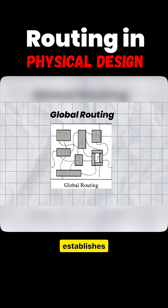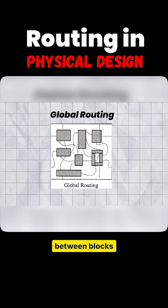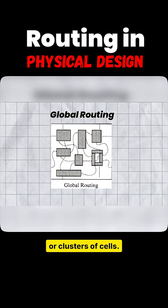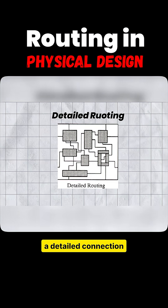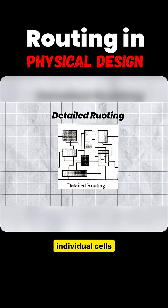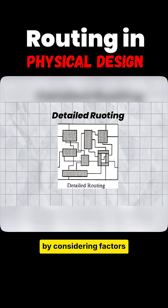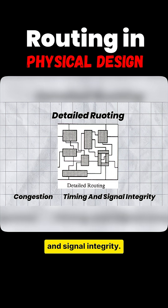Global routing establishes high-level interconnections between blocks or clusters of cells. Detailed routing establishes detailed connections between the individual cells while considering factors like congestion, timing, and signal integrity.